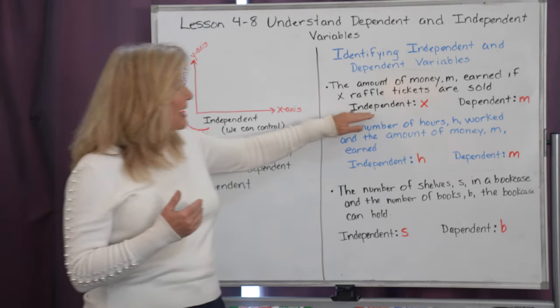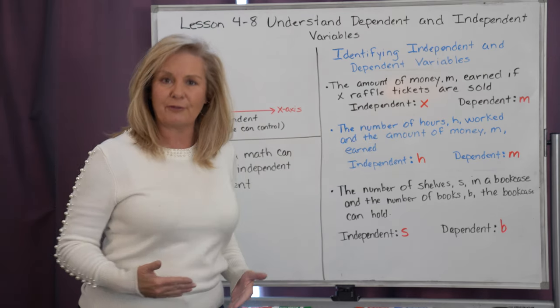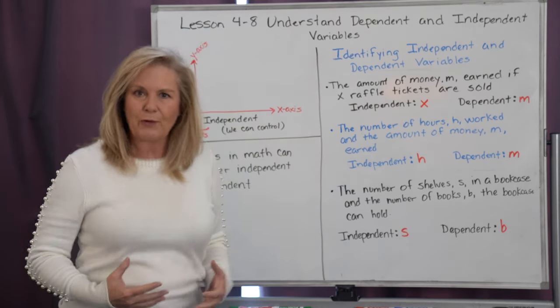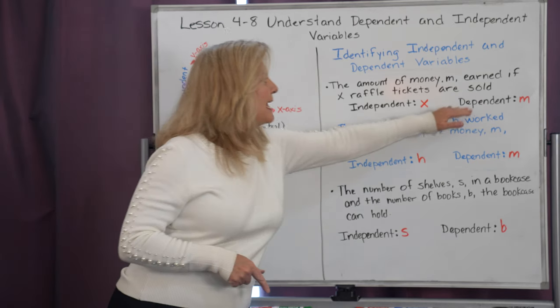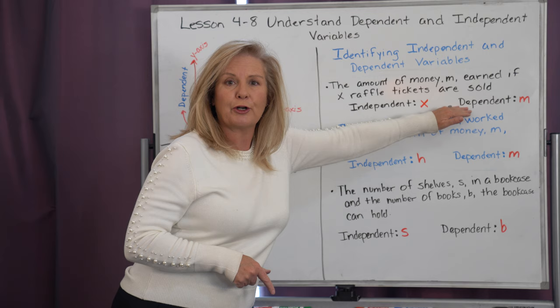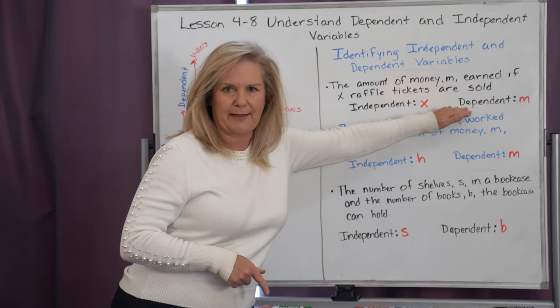When we are identifying our independent variable, the raffle tickets x is what we can control, and it directly affects how much money, m, that we will earn. Therefore, m is our dependent variable.